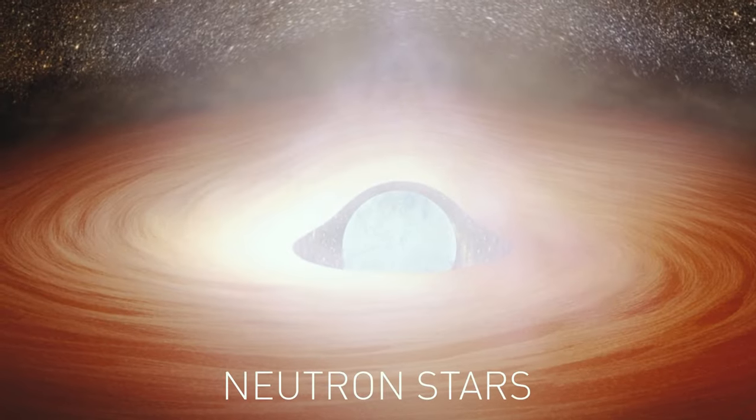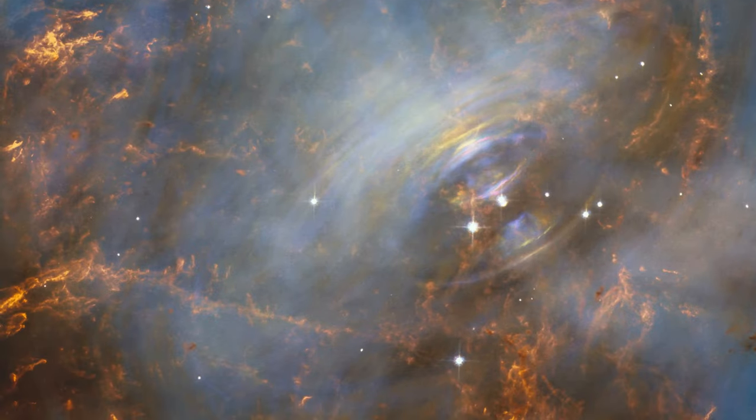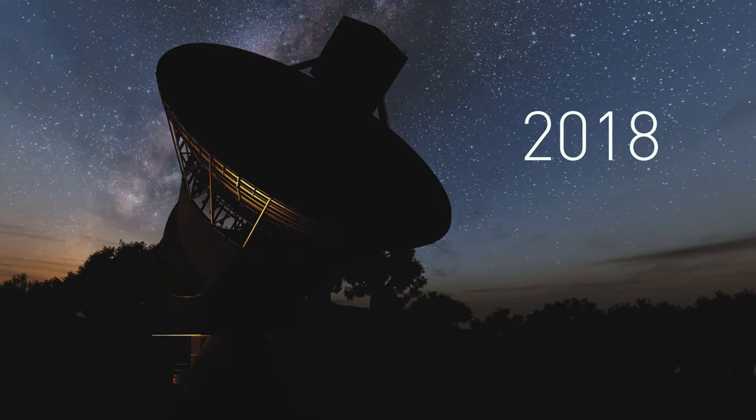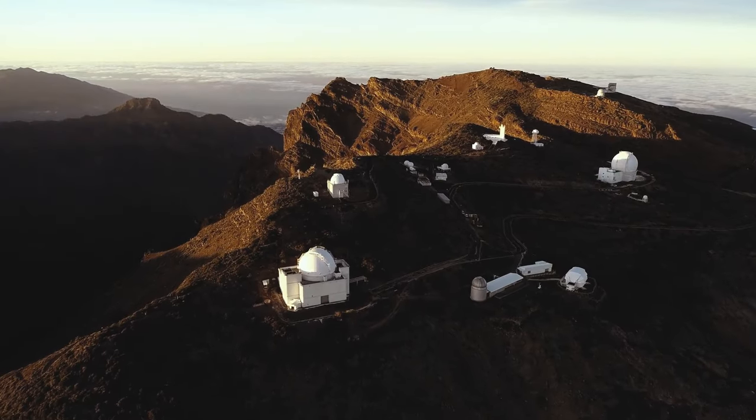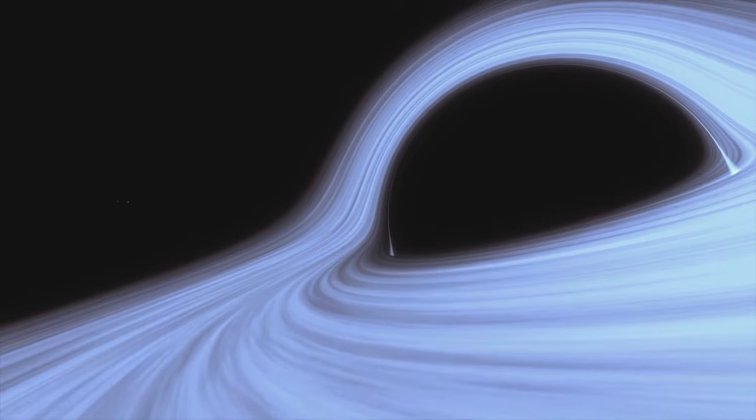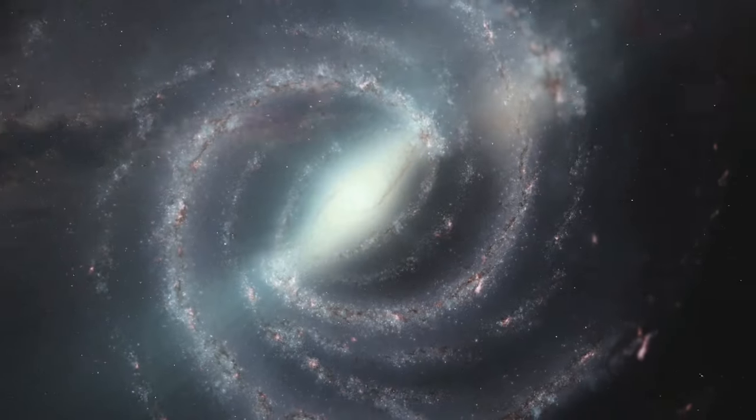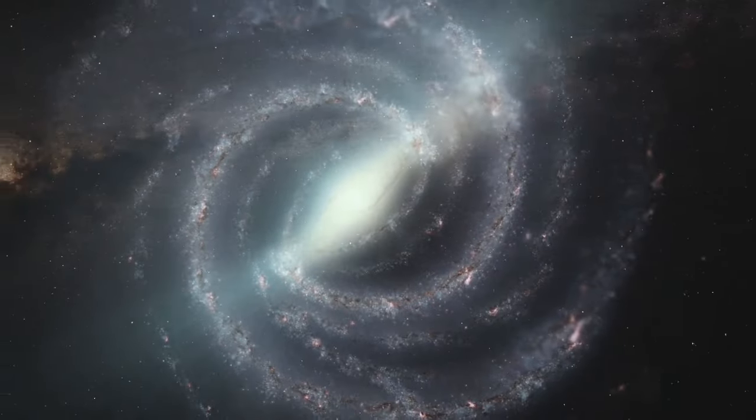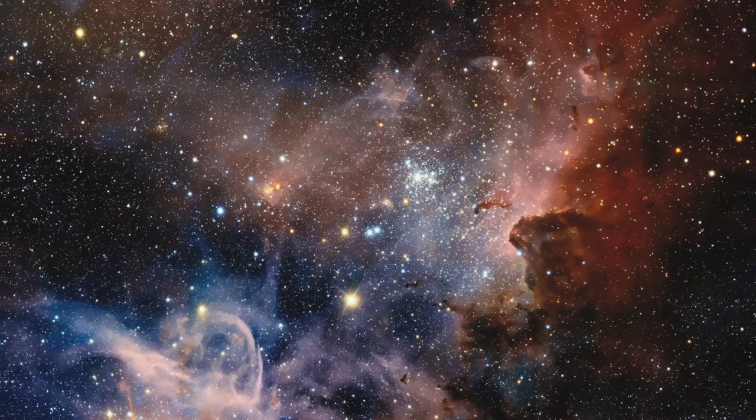Neutron stars are ultra-dense collapsed cores of giant stars. They emit X-rays or radio waves. But in 2018, astronomers discovered a weird stream of infrared light. It seemed to be coming from a neutron star 800 light-years away from our planet. The most plausible theory is that this signal was probably produced by a disk of dust surrounding the star.